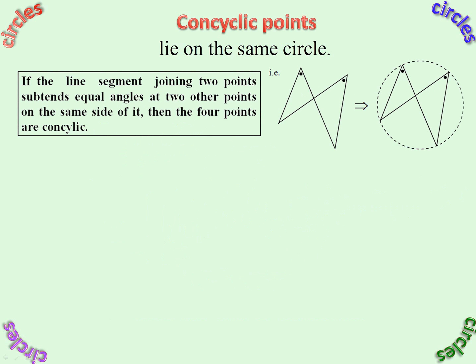So here are the theorems. Converse Angles in the Same Segment: if that angle equals that angle — the tips of the bowtie — then it does lie on a circle. If the line segment joining two points subtends equal angles at two other points on the same side of it, then the four points are concyclic. It's quite difficult getting the wording right for that theorem.